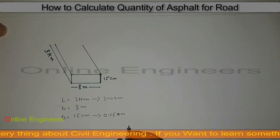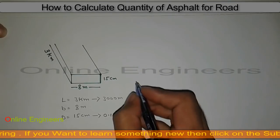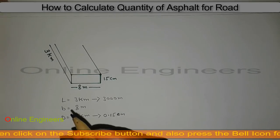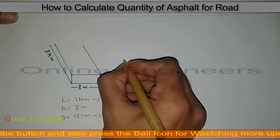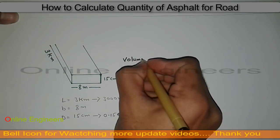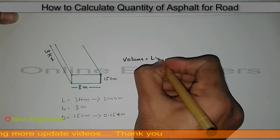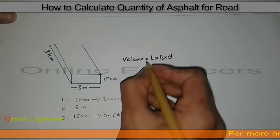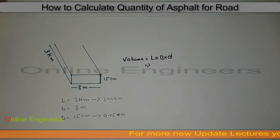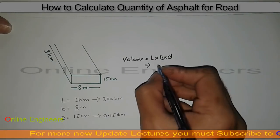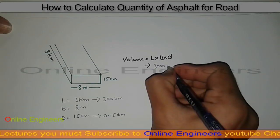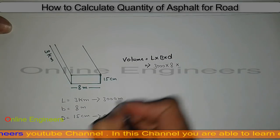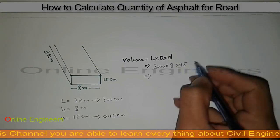Now I want to find out the volume of this road section. Volume is equal to length multiplied by breadth multiplied by depth. So we have length 3000 meters, multiplied by breadth 8 meters, multiplied by depth 0.15 meters.